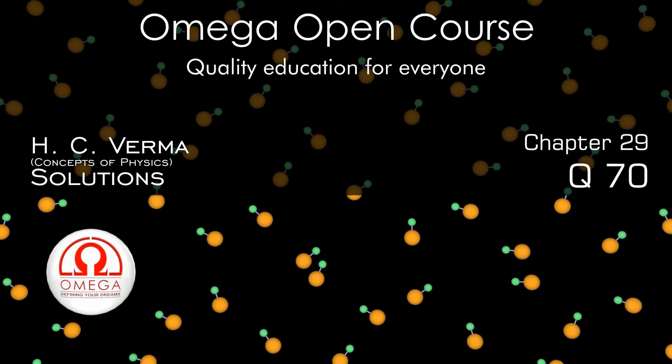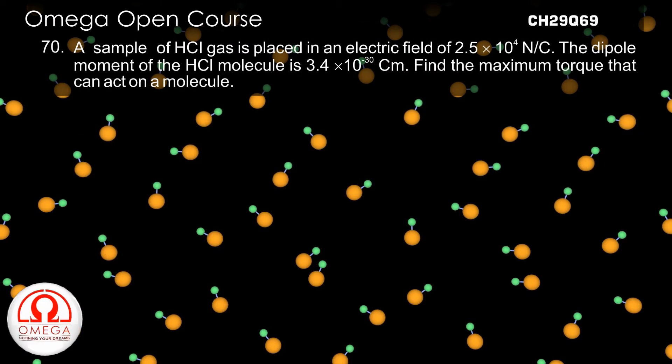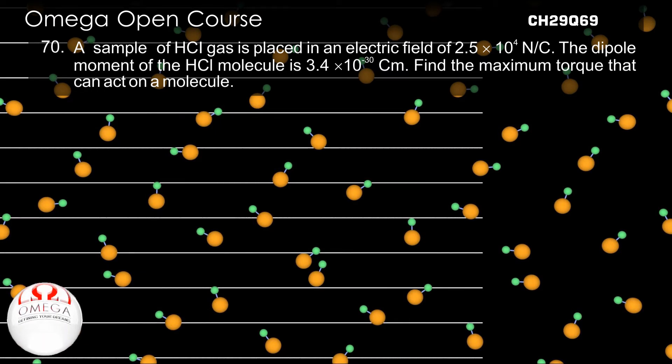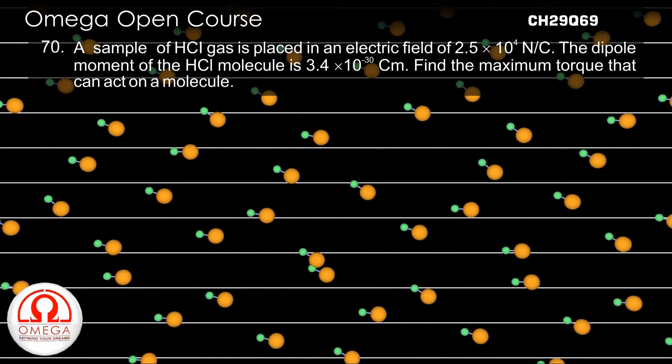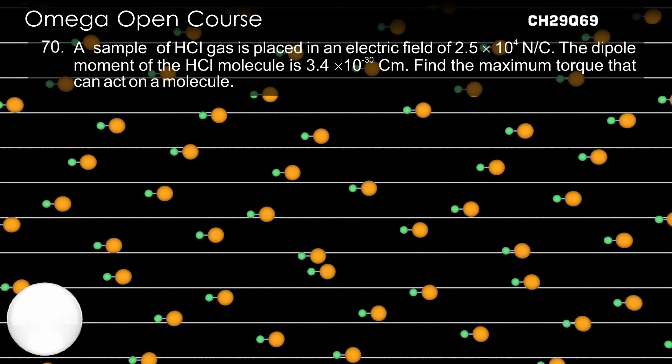H.C. Verma Chapter 29, Question No. 70: A sample of HCl gas is placed in an electric field of 2.5×10⁴ N/C. The dipole moment of each HCl molecule is 3.4×10⁻³⁰ C·m. Find the maximum torque that can act on a molecule.